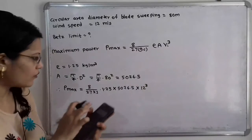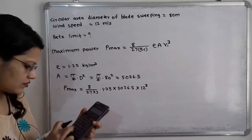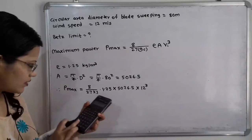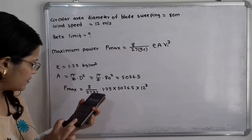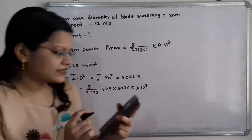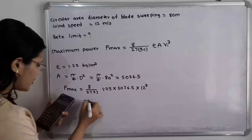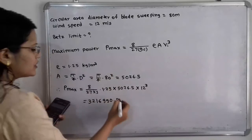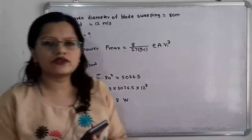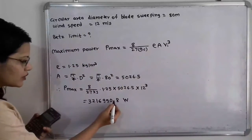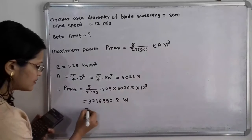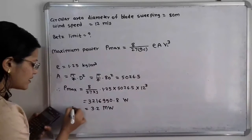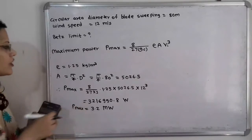Completing the calculation, the answer is 3,216,990.32 watts. Converting to megawatts by moving the decimal point 6 digits to the left gives 3.2 megawatts. This is the maximum power, also called the Betz limit.